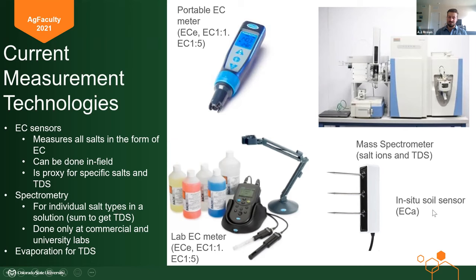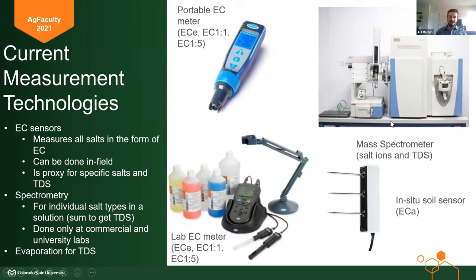To the right of that, we have what I'm calling an in-situ soil sensor measuring bulk conductivity, ECa. You can see three steel rods pulsing with electricity, giving us a measure of conductivity of not just water, but also soil and the air in there as well. Then there's the mass spectrometer — a machine where you run water through it, and it gives us the specific amount of ions of each type: how much sodium, how much chloride, how much calcium, and so on. If you sum the concentration of each ion together, you get total dissolved solids.